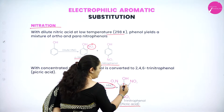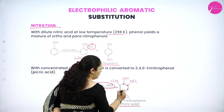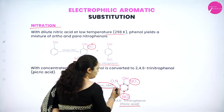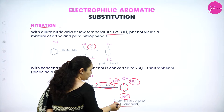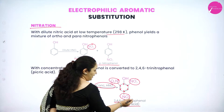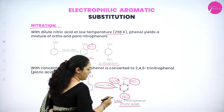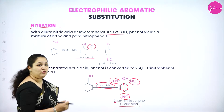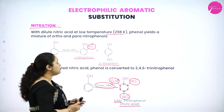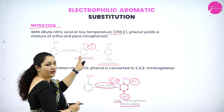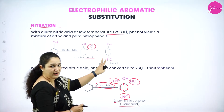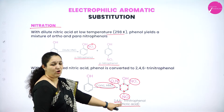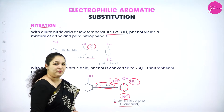For the IUPAC name, numbering the positions as 1, 2, 3, 4, 5, and 6: we have the NO2 group in position 2, position 4, and position 6. So the name is 2,4,6-trinitrophenol, since there are three NO2 groups. The other name of this compound is picric acid. To summarize: with dilute nitric acid at low temperature you get a mixture of ortho-nitrophenol and para-nitrophenol, whereas with concentrated nitric acid you get picric acid, i.e., 2,4,6-trinitrophenol.